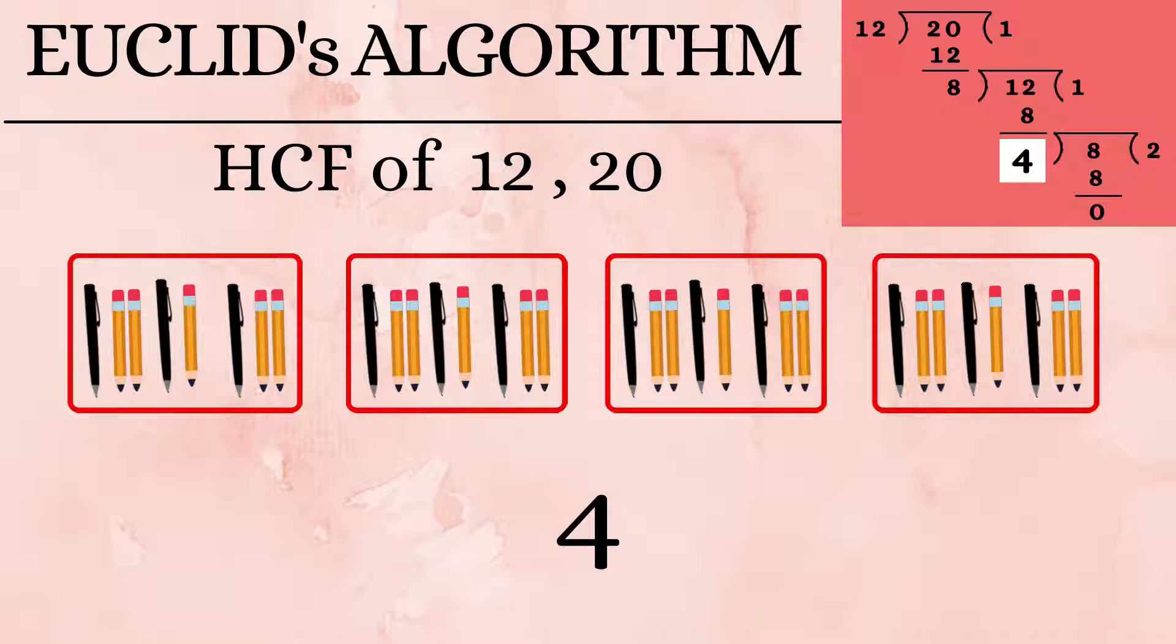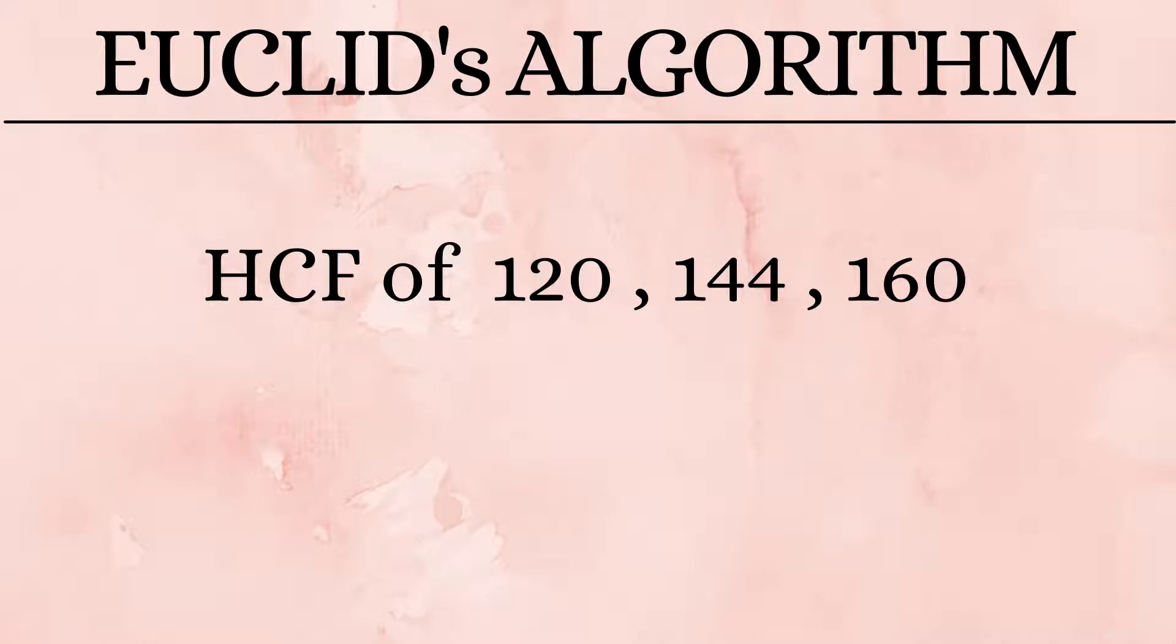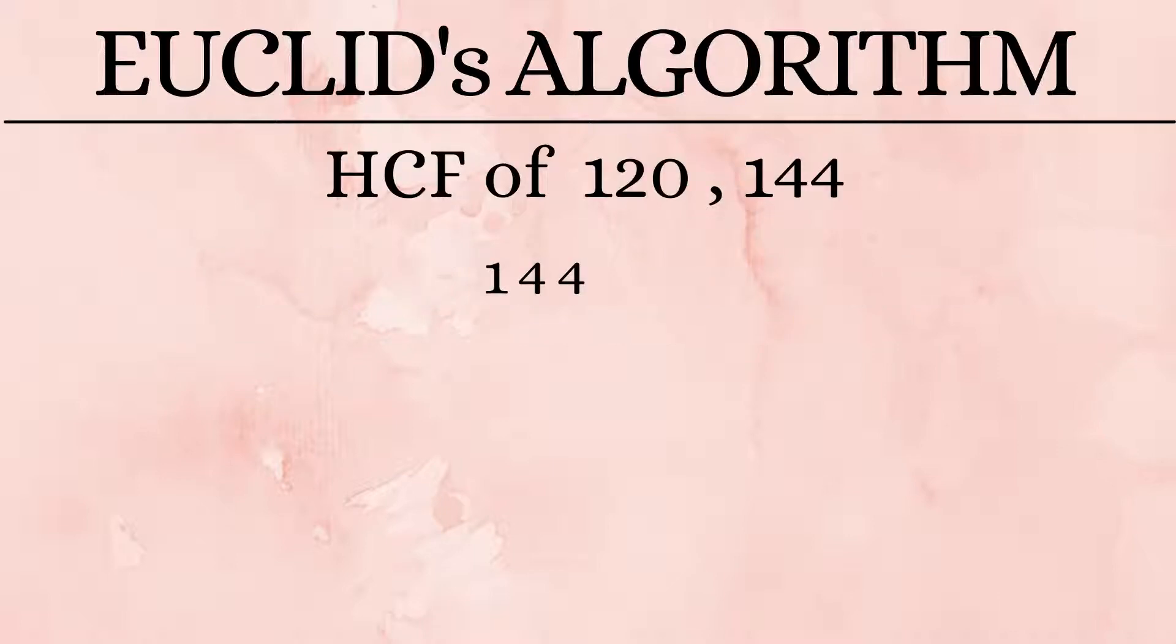Now it's time to find the HCF of 3 numbers: 120, 144, and 160. To start with we pick up the first 2 numbers and find the HCF: 120 and 144. The largest of these 2 is 144. So we make it the dividend and 120 as the divisor.